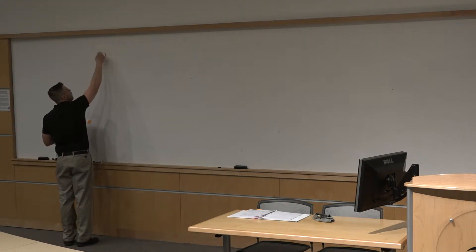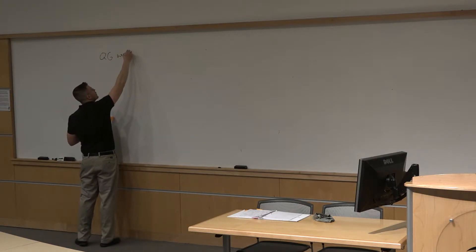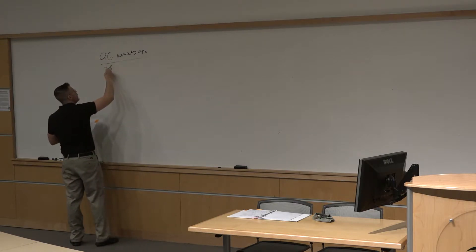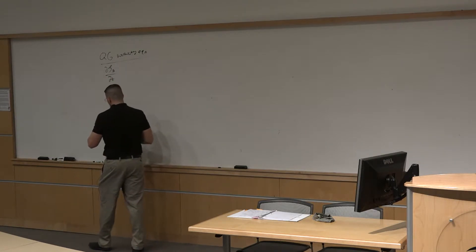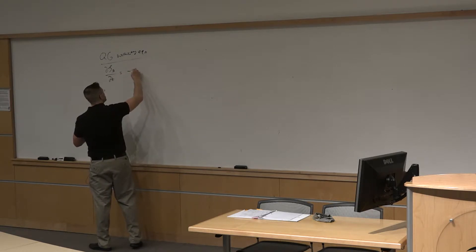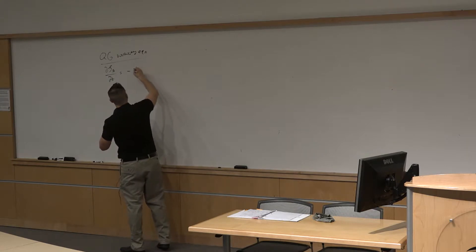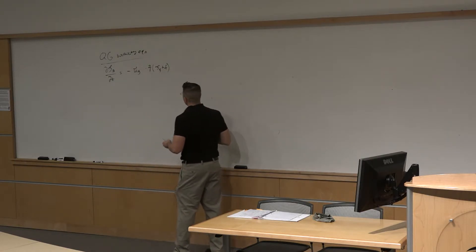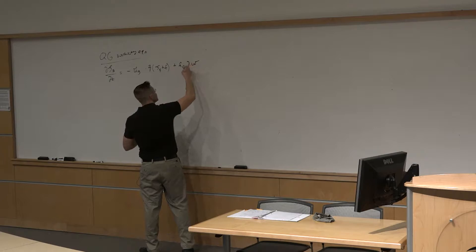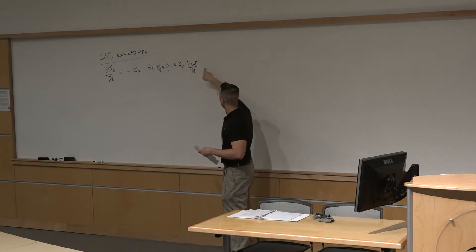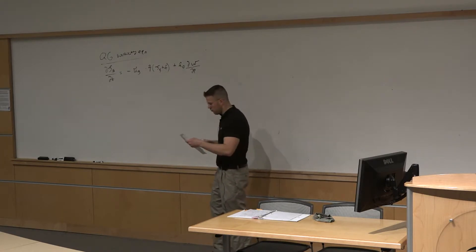We're going to be talking about quasi-geostrophic theory now, and there are two fundamental equations that lie at the foundation of quasi-geostrophic theory. Starting with the quasi-geostrophic vorticity equation: the rate of change of the geostrophic vertical vorticity with respect to time — the local tendency — can be expressed as an advection term, minus u_g dot del(zeta_g + f), which is the horizontal advection of the absolute vorticity, plus a term referring to the stretching of planetary vorticity, involving the rate of change of vertical motion with pressure.